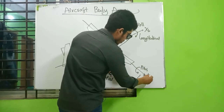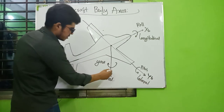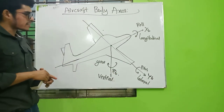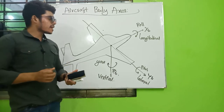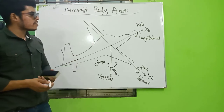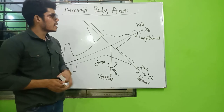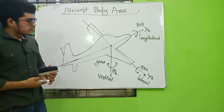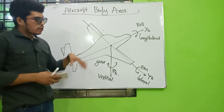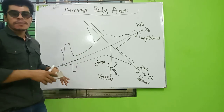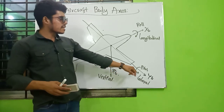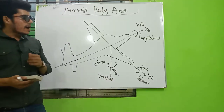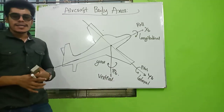Then Yb, then Zb. So G, X, Y, B. The Xb is the longitudinal axis. The Xb is the longitudinal axis — that means X is the one axis. The Yb axis is the lateral axis.